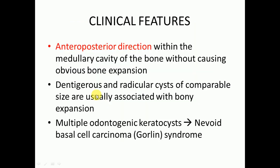One characteristic feature of the odontogenic keratocyst is that it expands in the anterior-posterior direction within the medullary cavity of the bone without causing obvious bony expansion of the buccal and lingual cortical plates. By contrast, dentigerous and radicular cysts of comparable size are usually associated with buccal and lingual plate expansion.